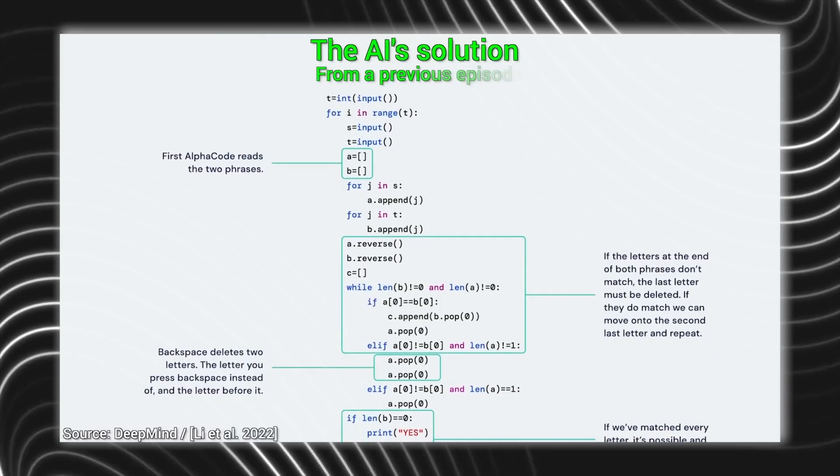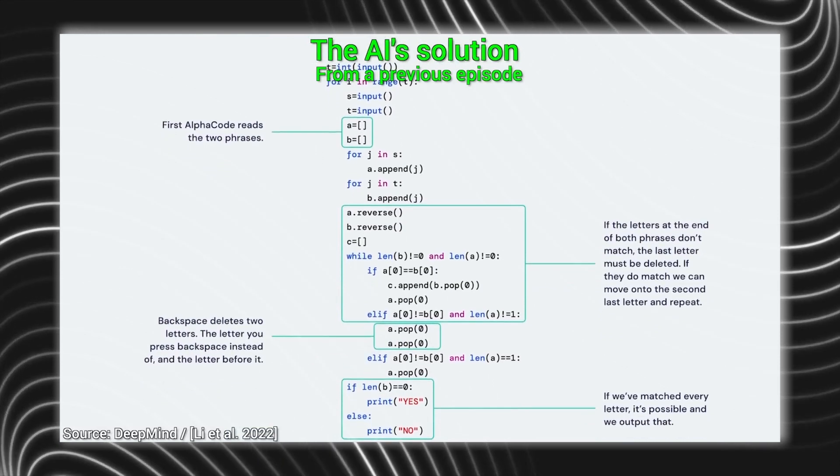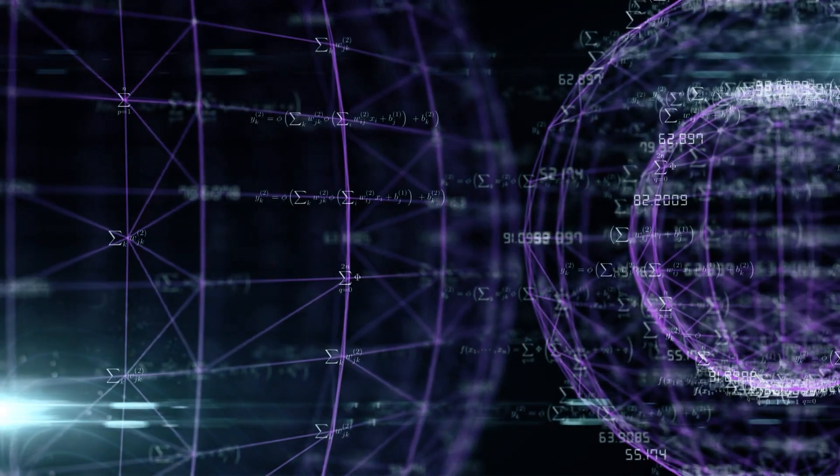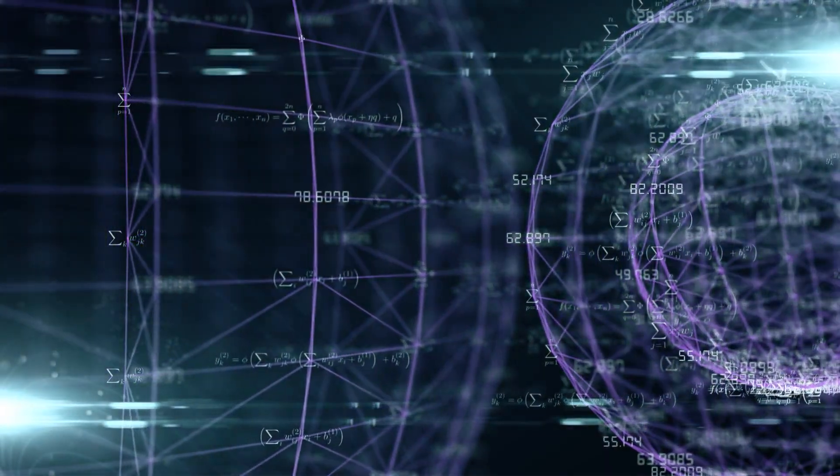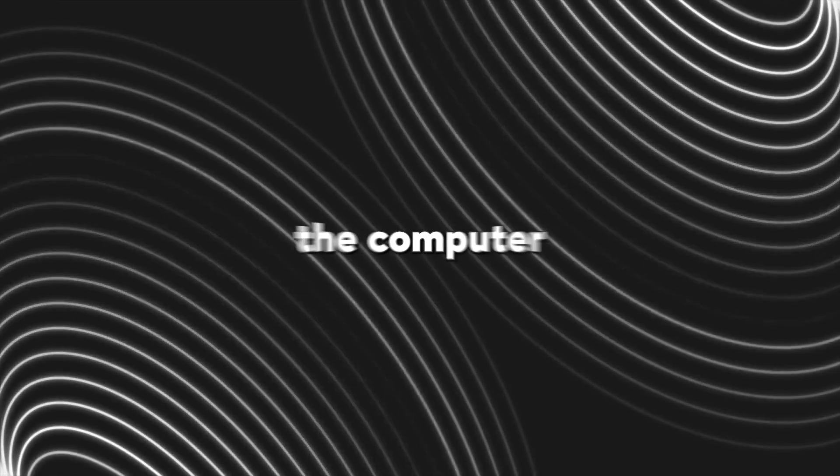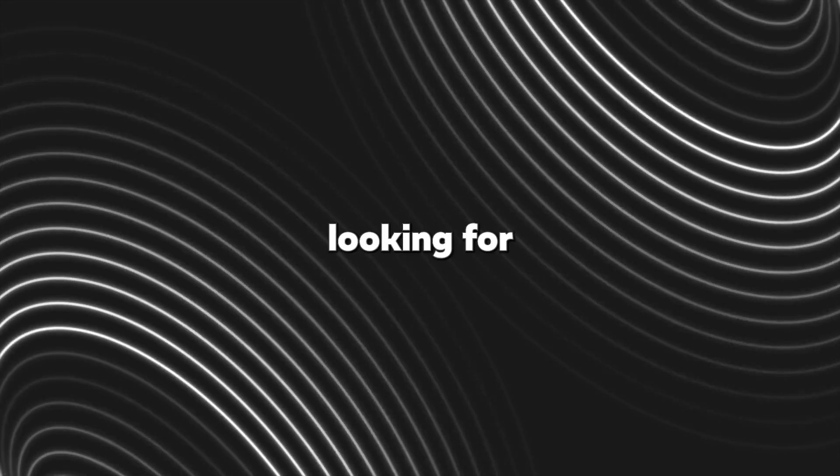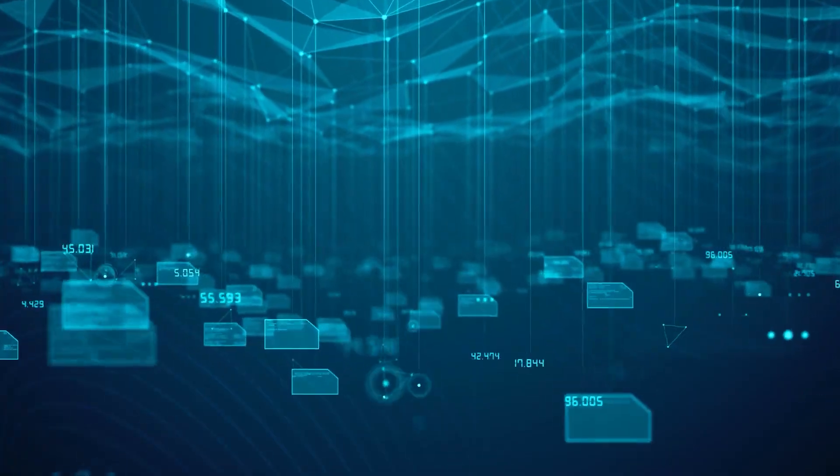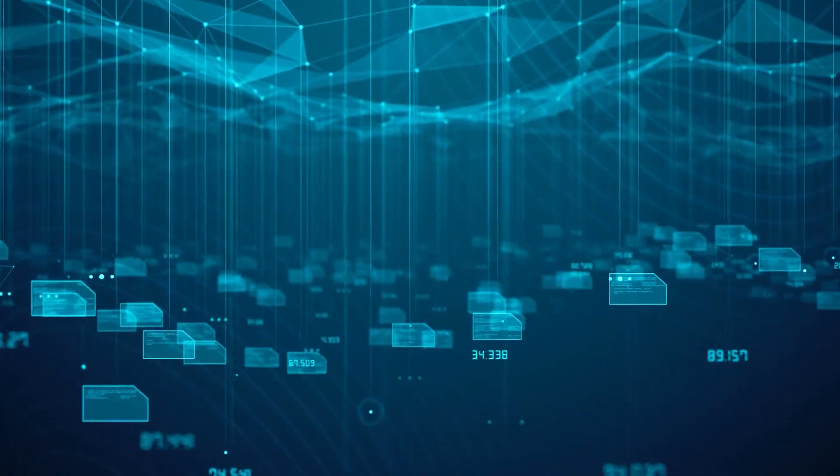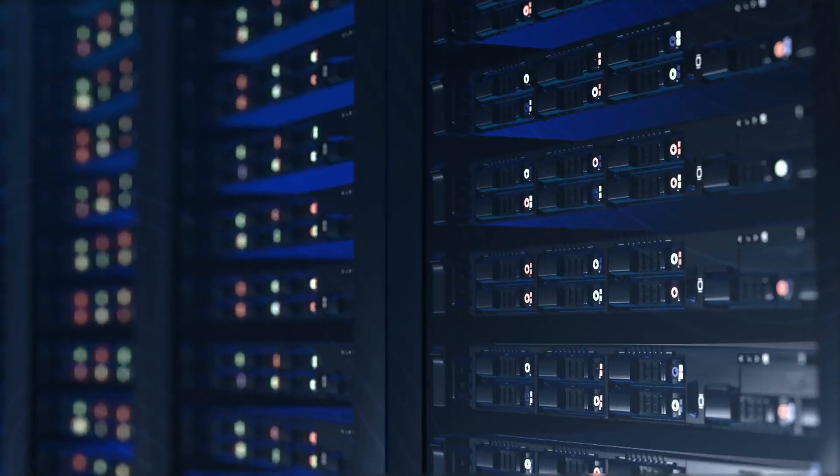AlphaDev also developed a new algorithm for hashing information. This algorithm is used for storing and retrieving data, like a list of students in school or a customer database. Thanks to this system, the computer knows exactly what it's looking for and where to find it. AlphaDev's hashing algorithm resulted in a 30% increase in speed for retrieving data typically found in data centers.